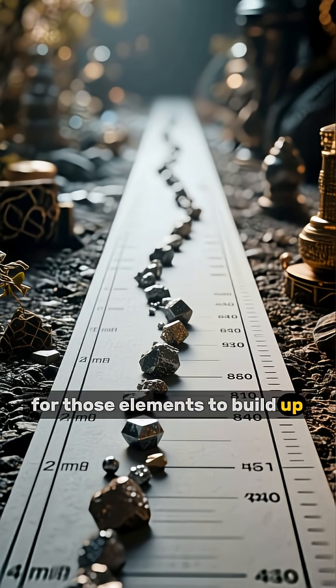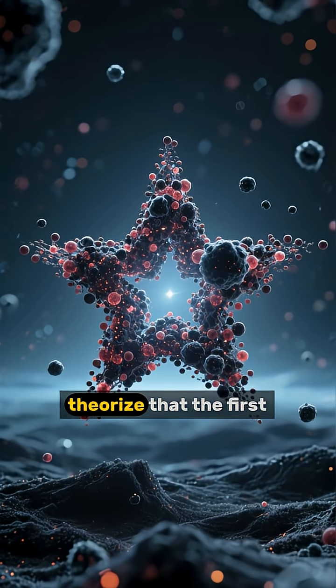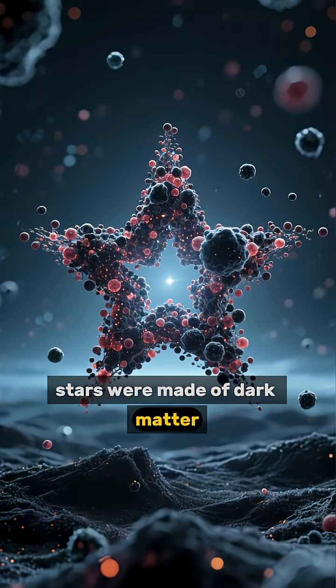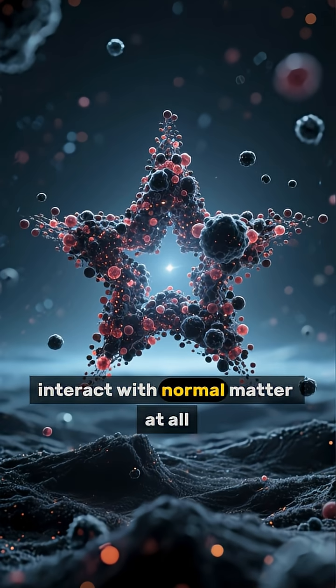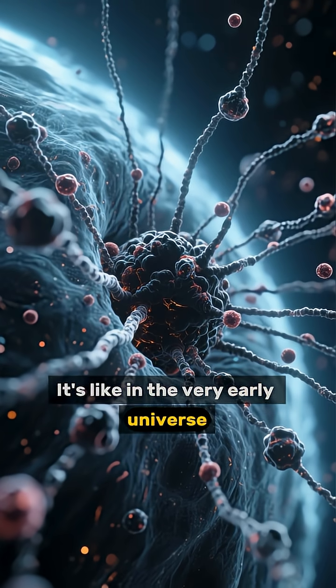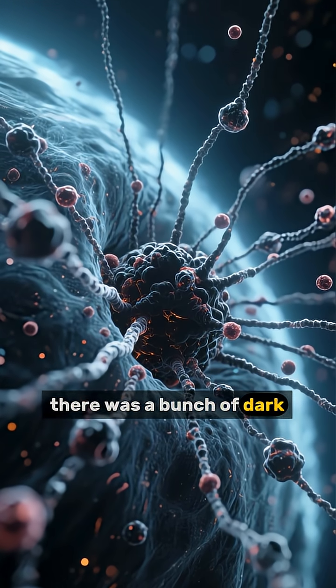So some scientists theorized that the first stars were made of dark matter, which doesn't interact with normal matter at all. It's like in the very early universe there was a bunch of dark matter floating around.